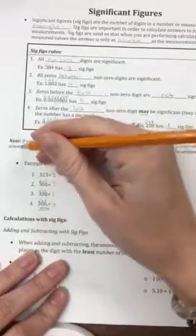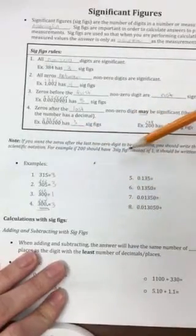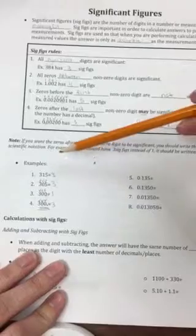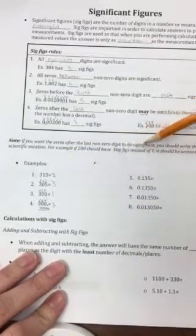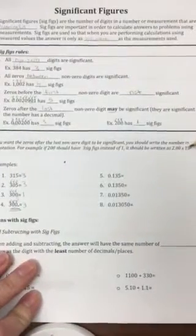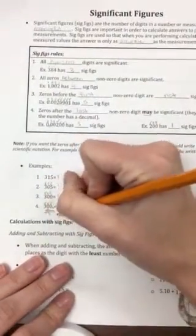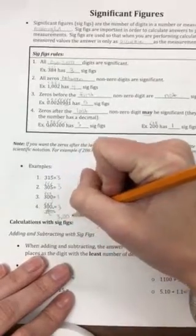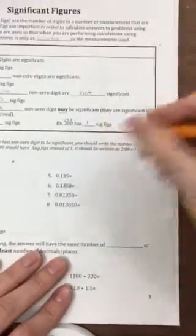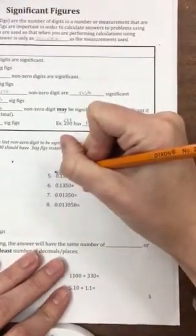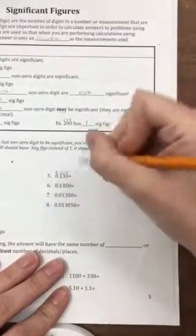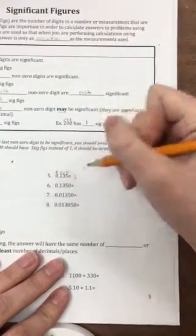Now, that last example brings up an important note. If you want zeros after the last non-zero digit to be significant, you should write the number in scientific notation. For example, if 200 should have three sig figs instead of one, it should be written as 2.00 × 10². So technically that number should have been written as 3.00 × 10². Moving on, here we have a front zero — never significant. The rest are all non-zeros, so they are significant. We have three significant digits here.